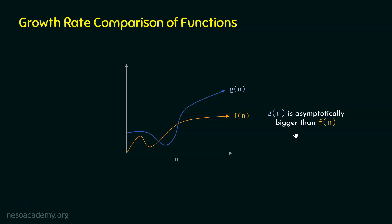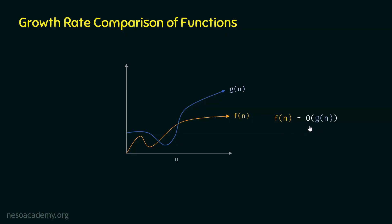We can represent the statement that G(n) is asymptotically bigger than F(n) as F(n) = O(G(n)). Through Big O Notation, we are telling that G(n) is asymptotically bigger than F(n), or after some point, G(n) is always bigger than F(n). So through Big O Notation, we are giving this guarantee that after some point, F(n) cannot grow more than G(n) — and that's what we can observe through this graph as well.